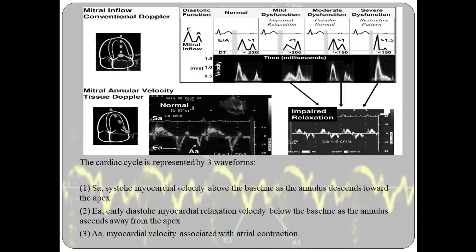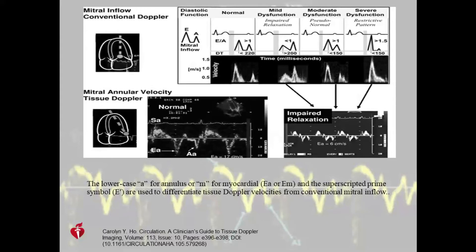This shows two Doppler images: the conventional mitral inflow Doppler and the mitral annular velocity tissue Doppler. We have three waveforms. S' is the systolic myocardial velocity above the baseline as the annulus ascends towards the apex. E' (or E prime) is the early diastolic myocardial relaxation velocity below the baseline as the annulus ascends away from the apex. Small 'a' is the myocardial velocity associated with atrial contraction. Lowercase 'a' is for annulus; if written 'M', that's for myocardial wall; and the superscript E prime is used to differentiate tissue Doppler velocities from conventional mitral inflow.